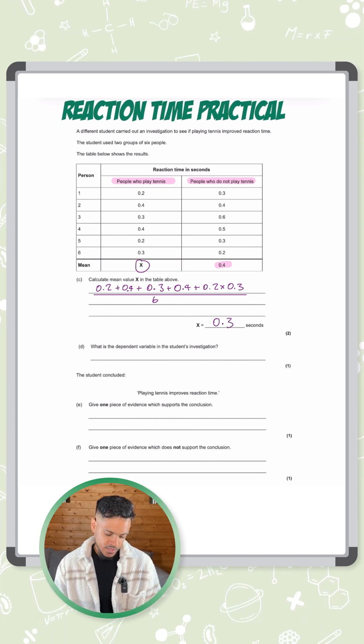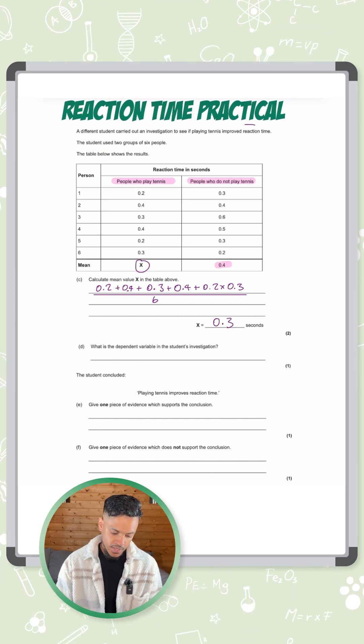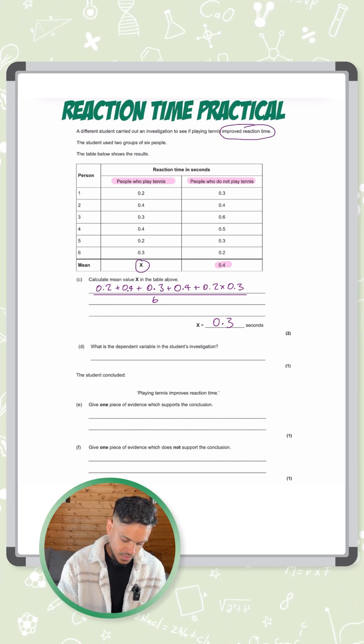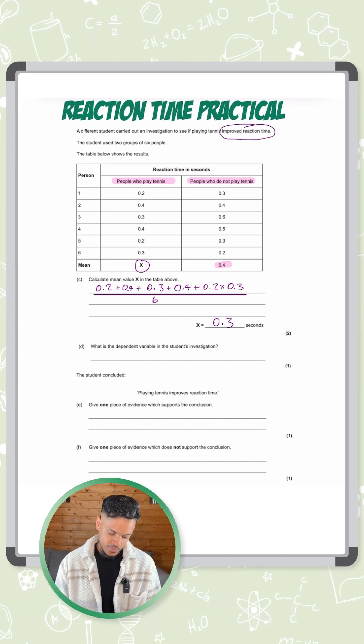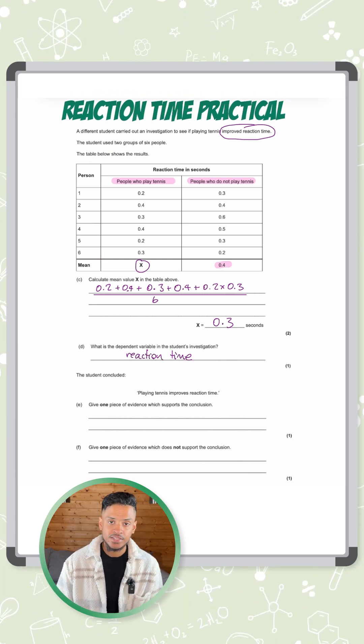Now the next part says, what is the dependent variable in the student's investigation? The dependent one is the one that you're measuring. It says quite clearly here, we're trying to measure their reaction time. So these times that we have is the reaction time of all the students.